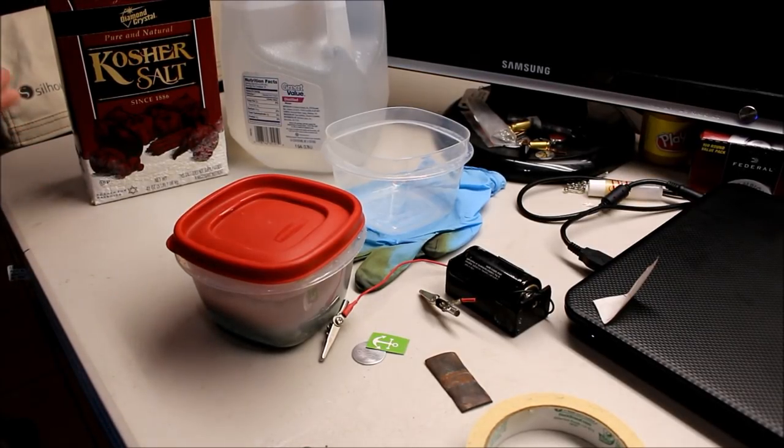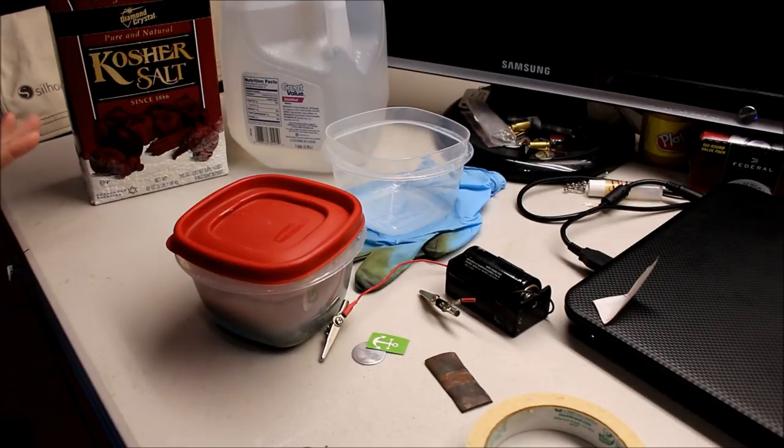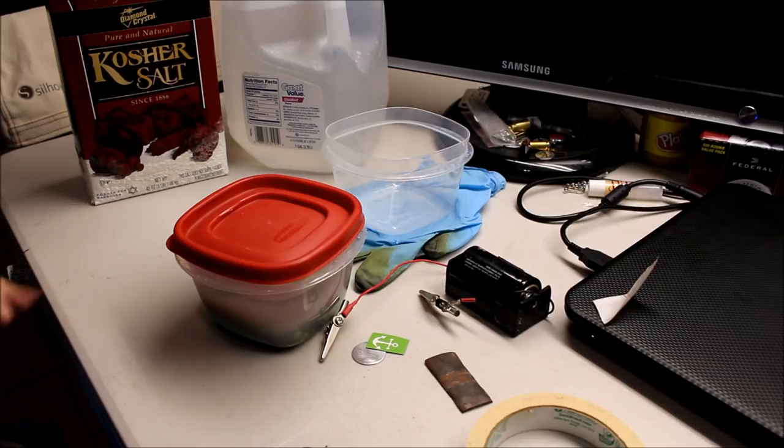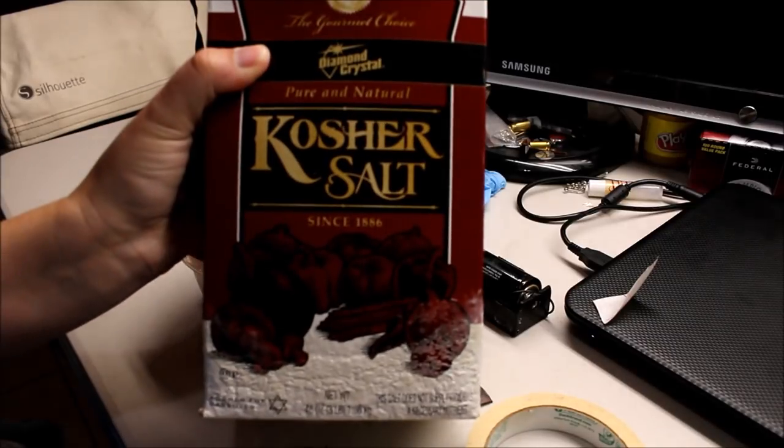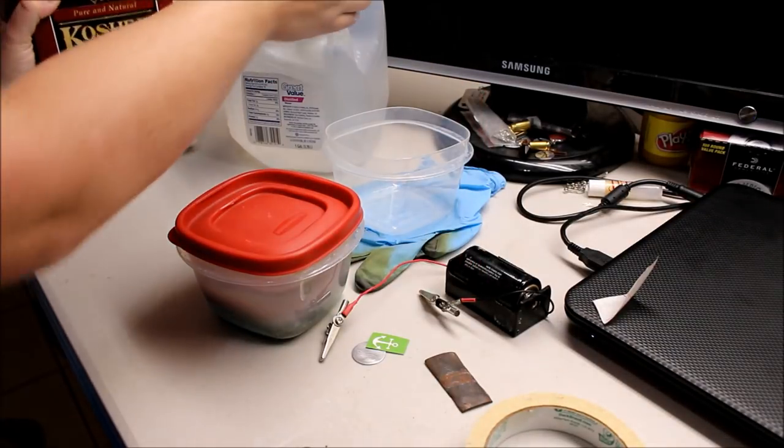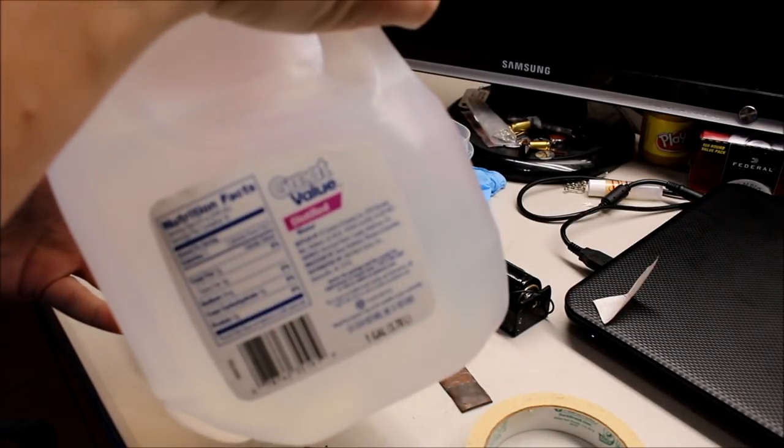Okay, so this is going to be a tutorial on how to saltwater etch aluminum. Aluminum is my favorite because it's kind of silvery and it does it really really fast. So I use kosher salt, distilled water...